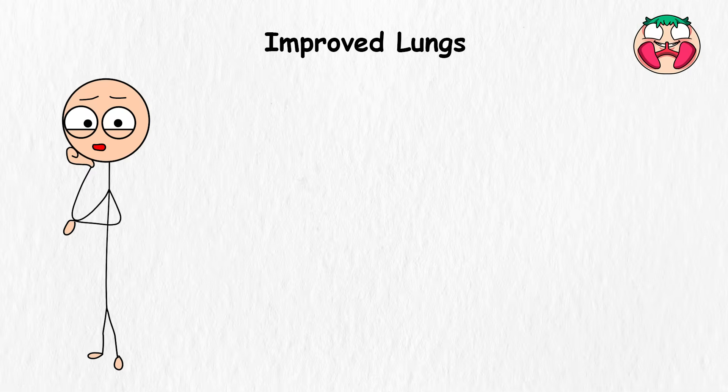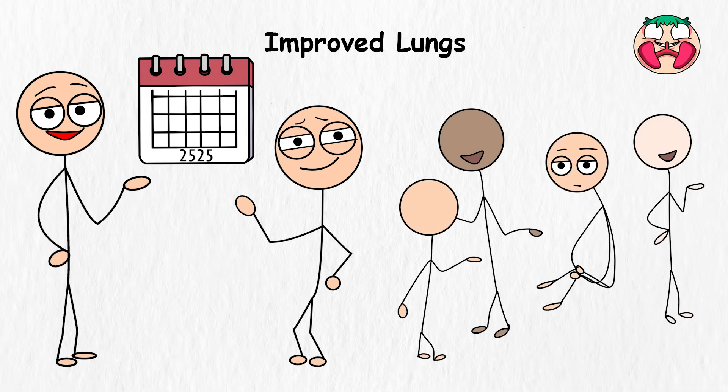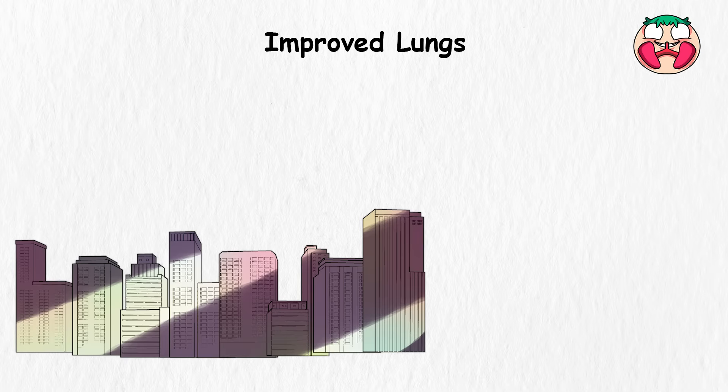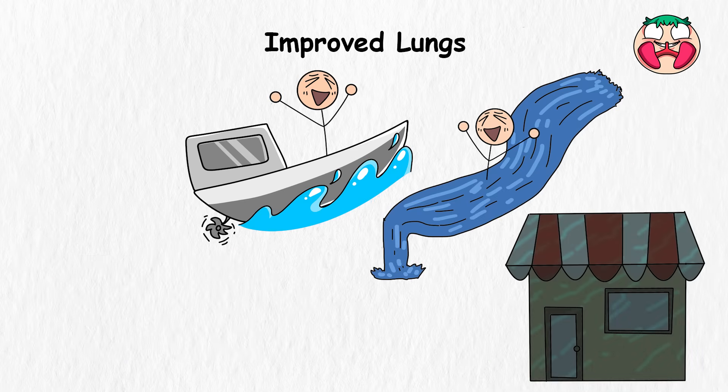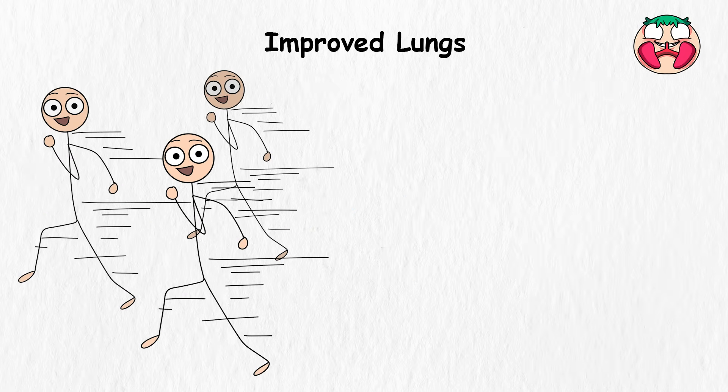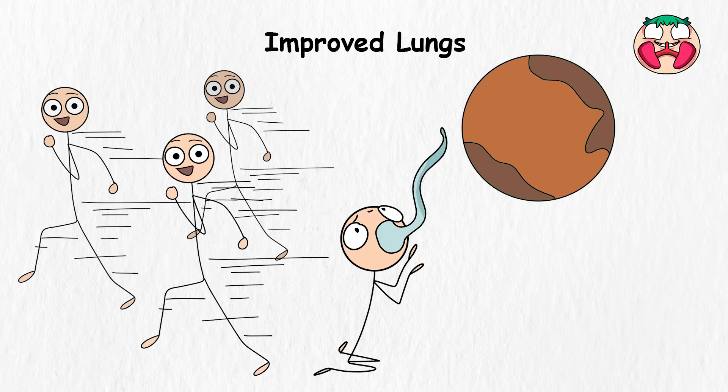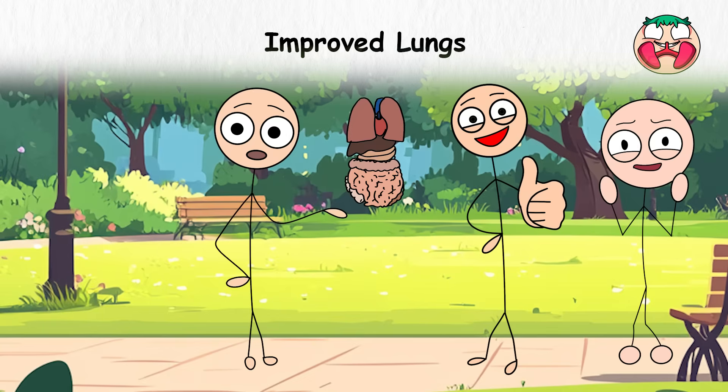Improved lungs. Picture this, it's the year 2525 and humans are no longer just surviving, they're thriving in extreme environments. Want a free dive to the bottom of the Mariana Trench for a quick selfie with a giant squid? No problem! Fancy running a marathon on Mars without a spacesuit? Easy peasy. And this would all be very possible because we might soon get epic upgrades like improved lungs.